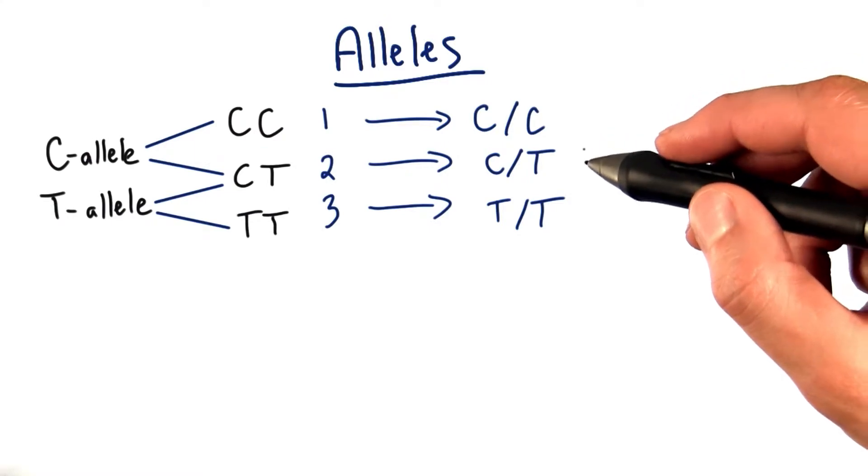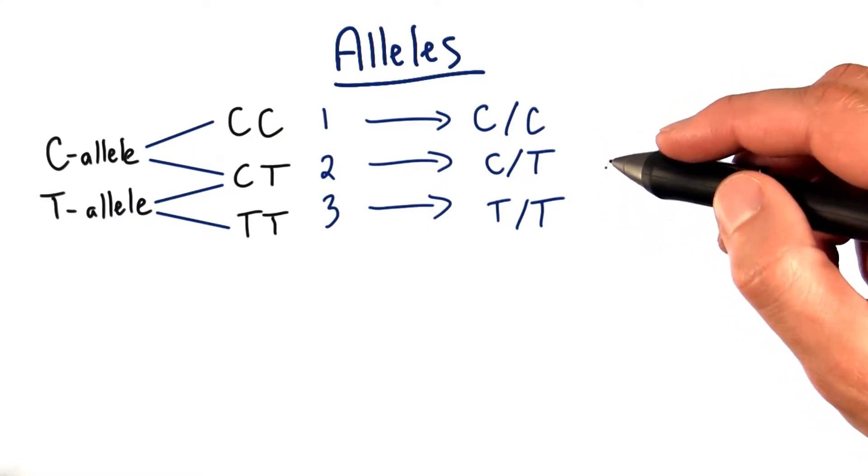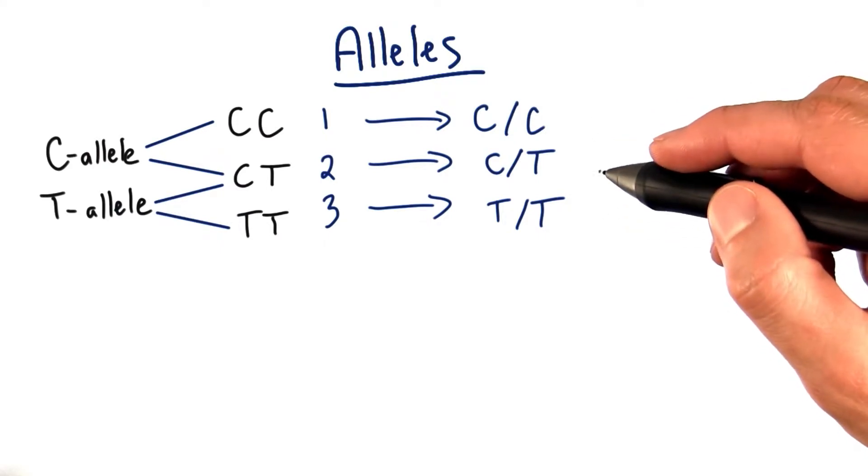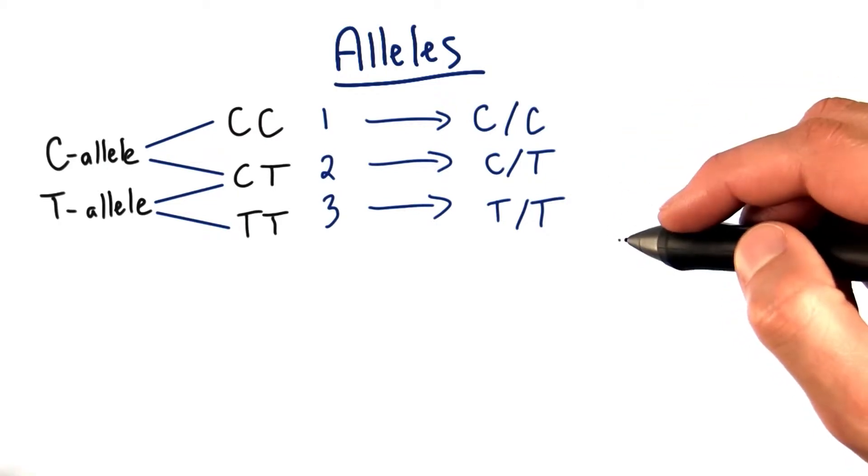Now there are two very important patterns that have just emerged that are really important for us to define because we're going to keep coming back to them throughout the whole of the course. Although we have three possible combinations of the alleles, there are two specific types of combinations.